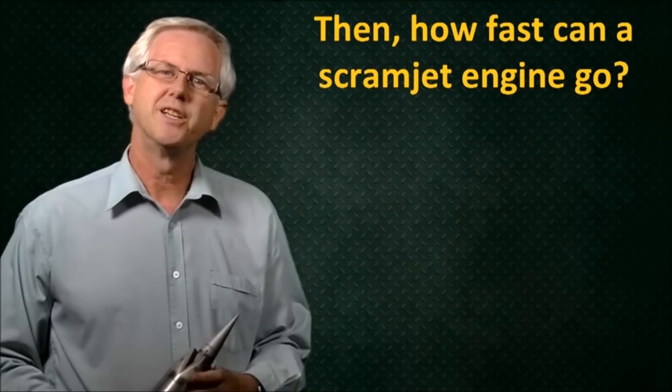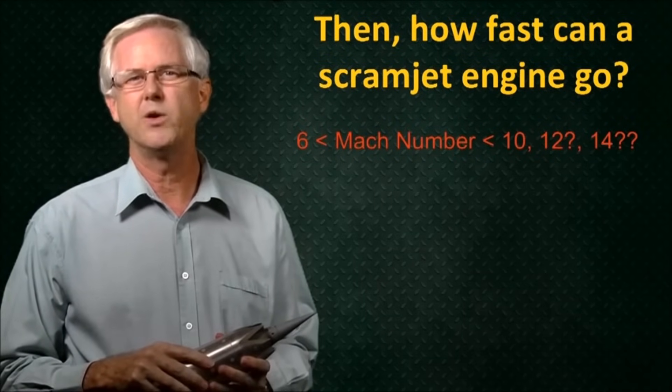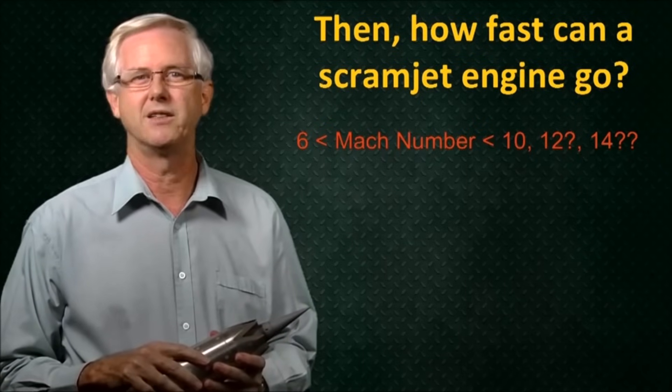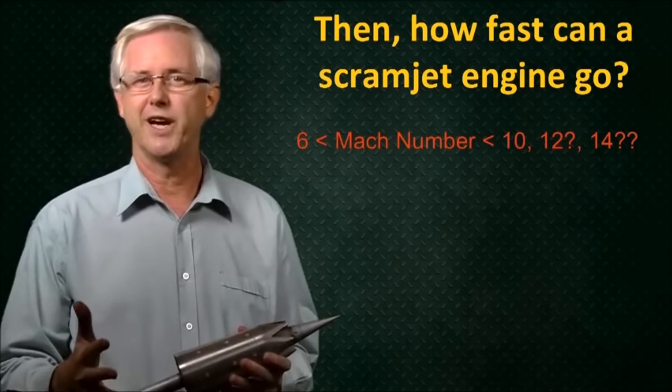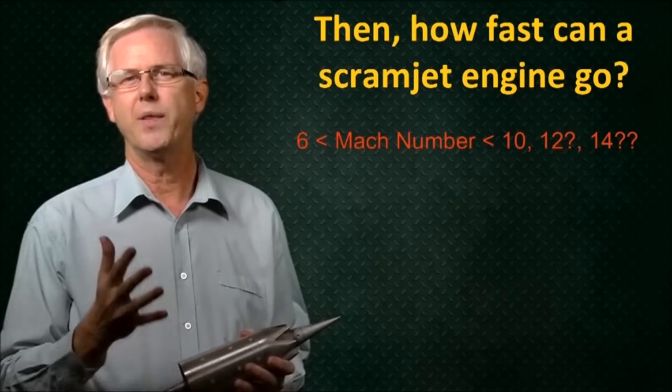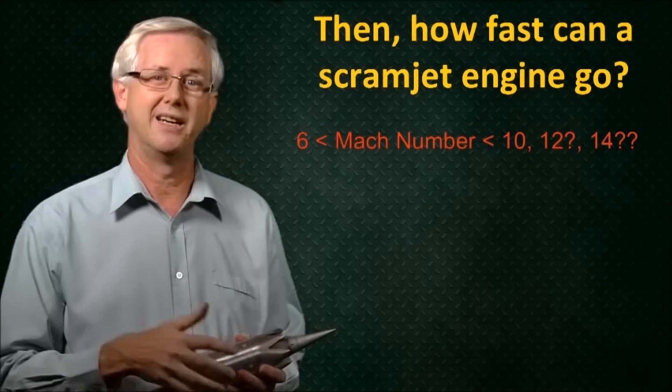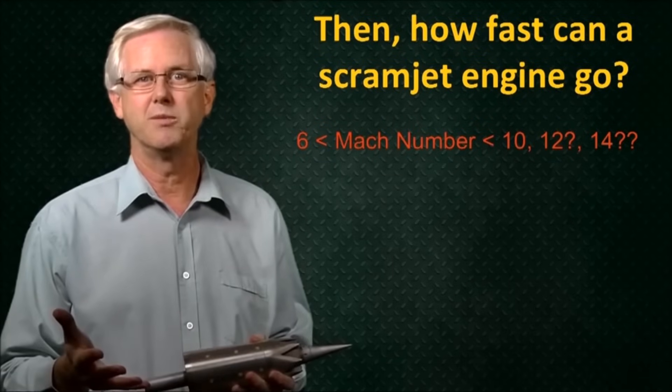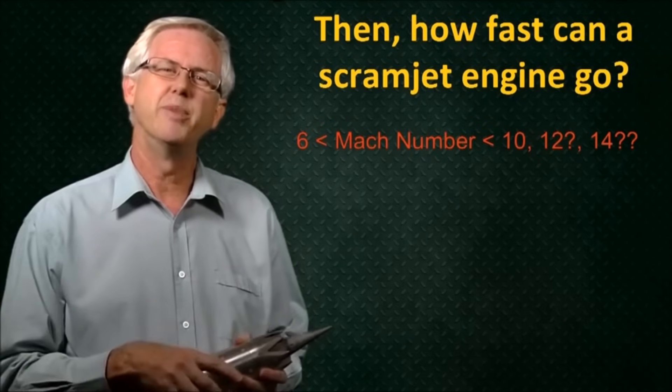So how fast can a scramjet engine go? Scramjet engines can potentially operate at speeds as slow as around Mach 6, so at around the speed where the ramjet engine cuts out. At this lower speed there's a crossover region where we could use either a ramjet or a scramjet. But what about the upper end? We're not sure what the upper Mach number limit is for a scramjet. We know we can reach Mach 10. There have been some experimental scramjets flown at Mach 10 conditions. Mach 12 may be possible. It would be nice if we could get up to Mach 14, but this is still an open question at the moment.